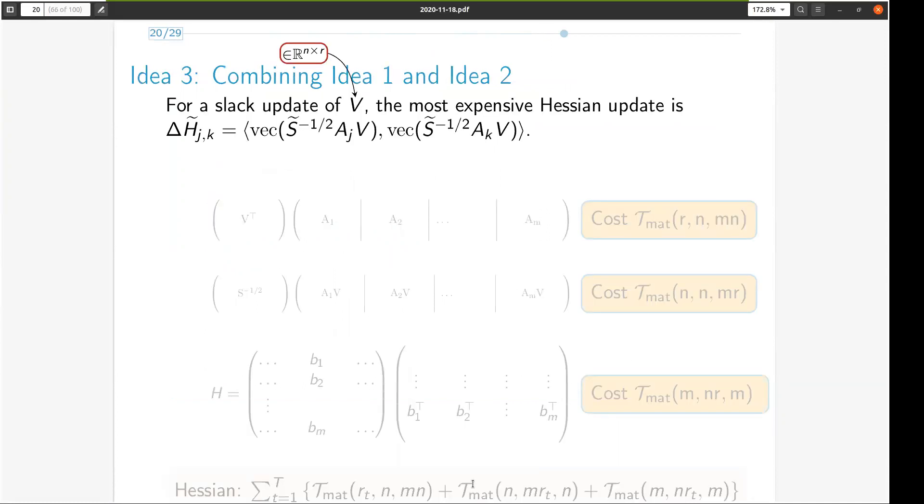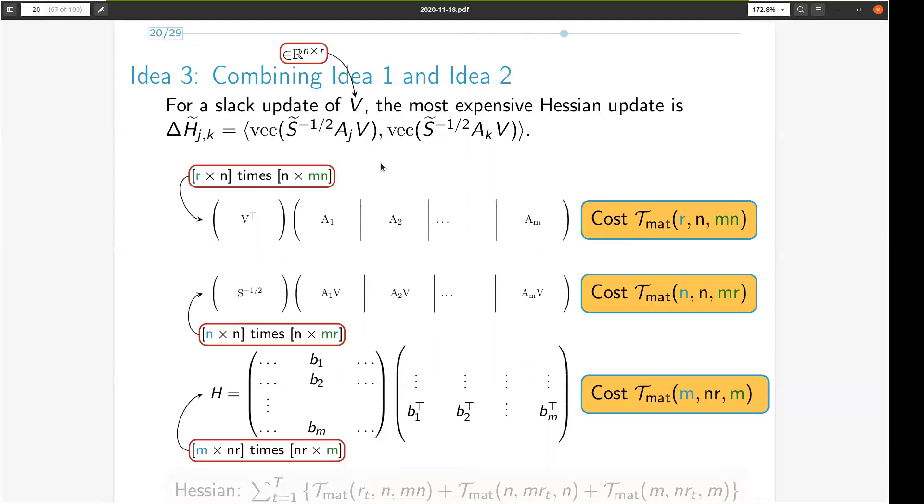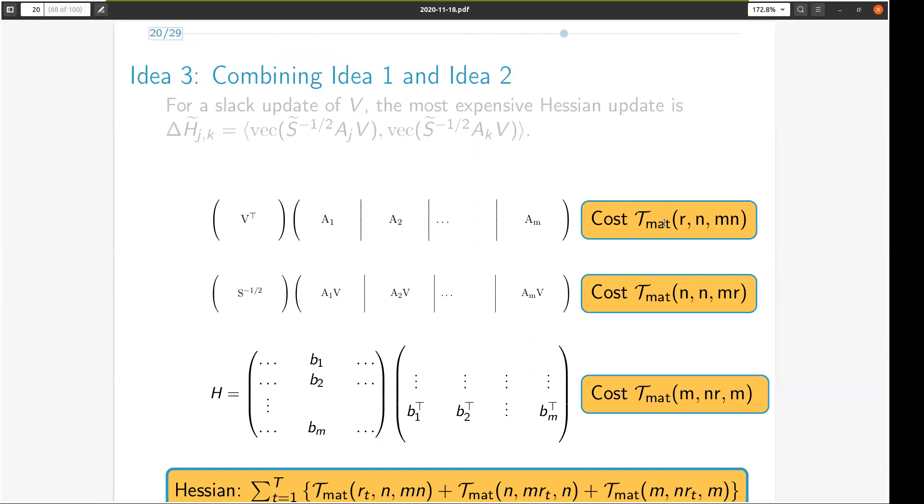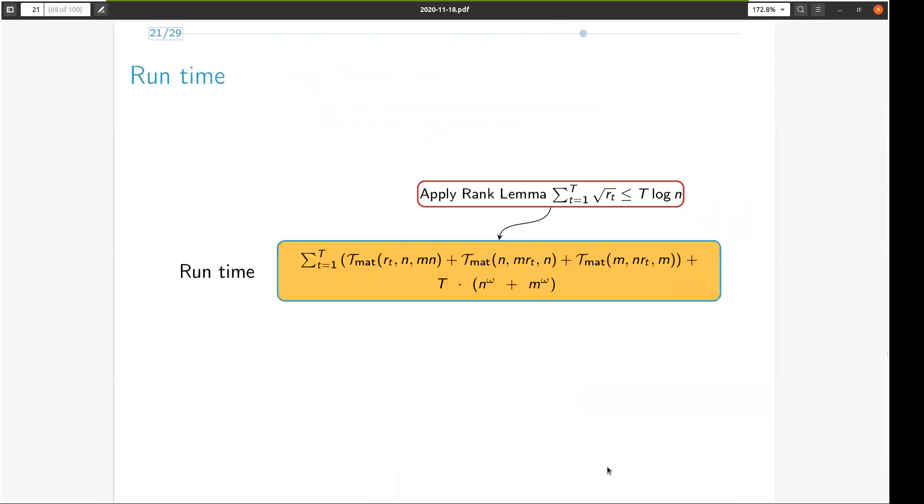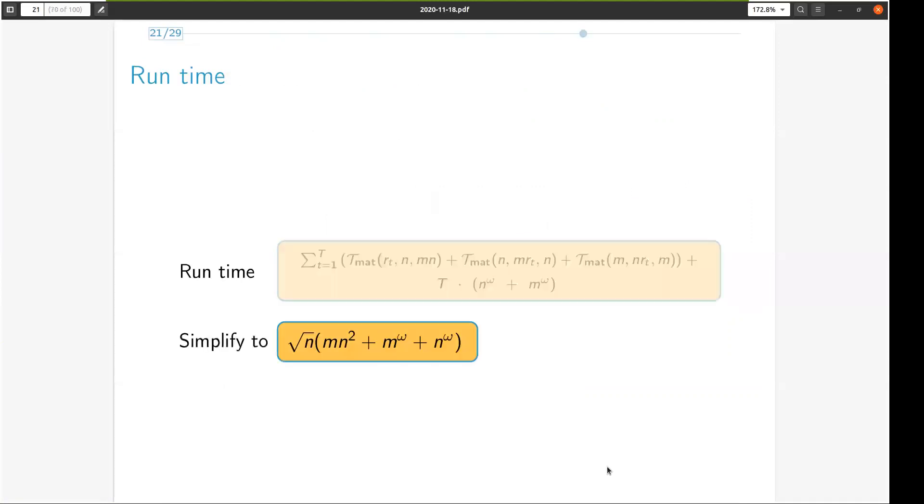To get the improved runtime bound on the Hessian computation, we combine the two ideas for Hessian computation that we've seen so far. First, suppose that the approximate slack matrix changes by rank r, then we observe that the most expensive term to compute in the update of the approximate Hessian is given by this inner product. We compute this term using the fast rectangular matrix multiplication idea from earlier. And note that unlike before, these terms depend on the rank r, in addition to depending on m and n. So over all iterations of our algorithm, the total cost of the approximate Hessian is given by this expression. Applying the rank lemma mentioned earlier and simplifying using properties of tmat gives us this final claimed expression for overall runtime.